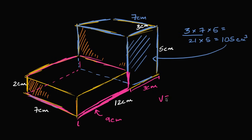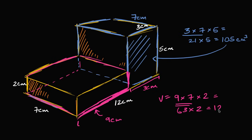So the volume of the magenta part is nine centimeters times seven centimeters times the height, two centimeters. Nine times seven is 63, and 63 times two: 60 times two is 120, three times two is six, so it's 126 cubic centimeters.